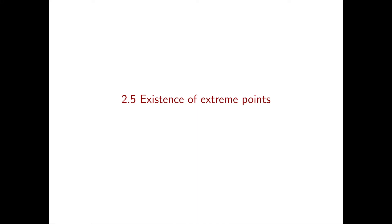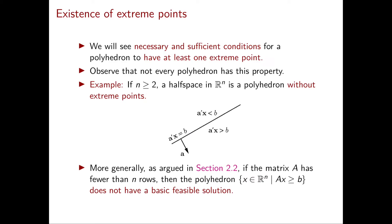In this video we're going to give necessary and sufficient conditions for a polyhedron to have extreme points. The first thing to realize is that not every polyhedron has extreme points. A very simple example is a half space in R2, which is the set of points satisfying A transpose X greater than or equal to B for some non-zero vector A and scalar B. Such a half space is a polyhedron that doesn't have any extreme points.